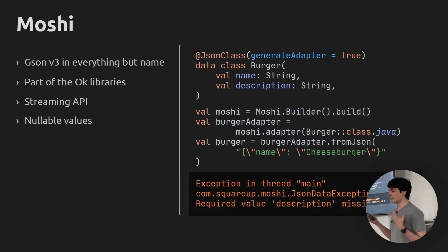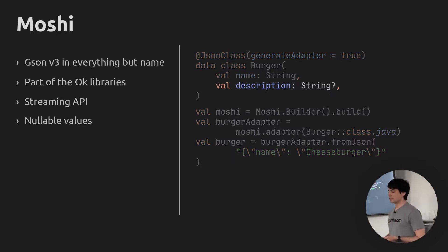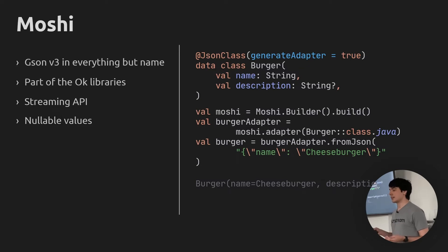Moshi's fail-fast mechanisms are a real lifesaver here. It also gives us really nicely worded error messages — it tells us that description was missing and that the error occurred at the root of the object. We can also make description nullable, which Moshi will interpret as being optional. If we try to parse the same string again without a description, we'll end up with a valid object that just has null as the description, which is fine because the Kotlin compiler will force us to handle it.